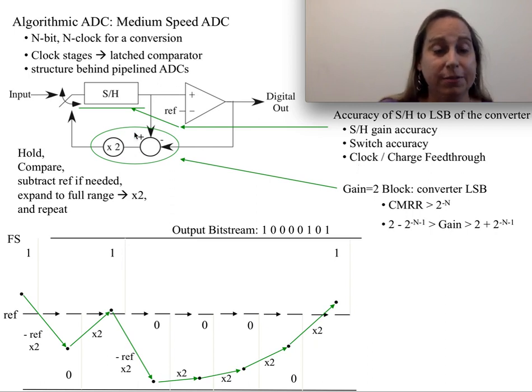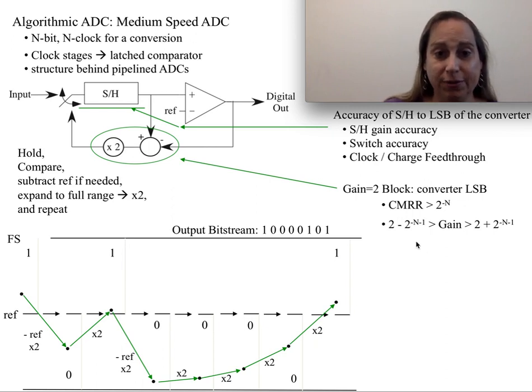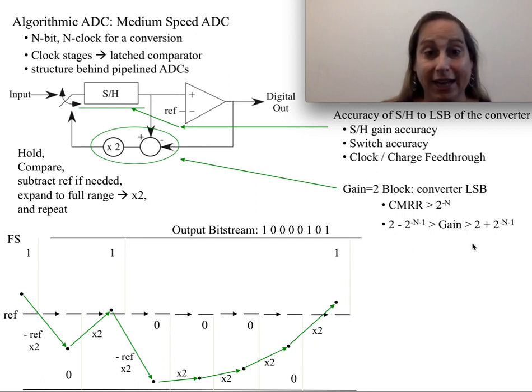The interesting part is this block right here. It's taking a difference of two values, one of which is a known reference. I'm taking the signal, subtracting a known value from it, then multiplying it by two to get it back up to full scale. To make it have a gain of two requires precisely two, not just sort of two, but within the resolution of the converter. That's a lot to ask.